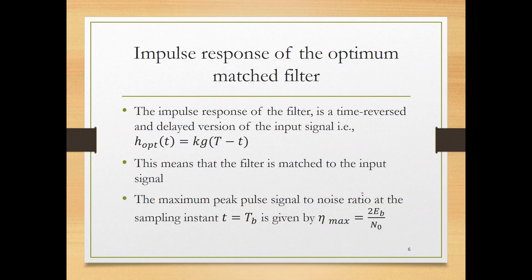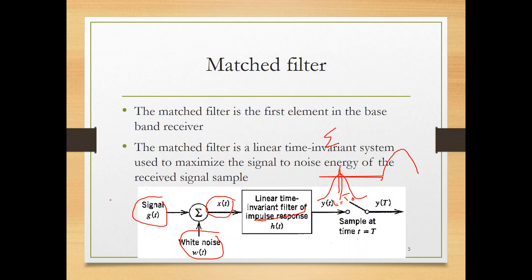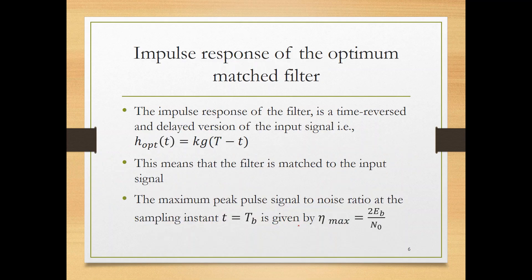The impulse response of the matched filter is a time-reversed and delayed version of the input signal. Suppose your input signal is like this, your matched filter will be the reciprocal, the reflection on the y-axis, not x-axis. So the reflection on y-axis will be this. Plus, you shift it, you shift it by T. It comes here. So this is basically a matched filter.